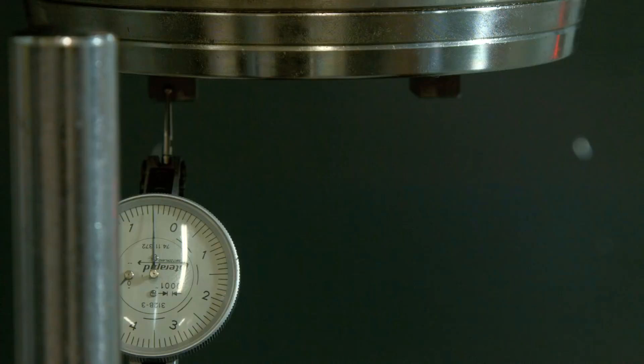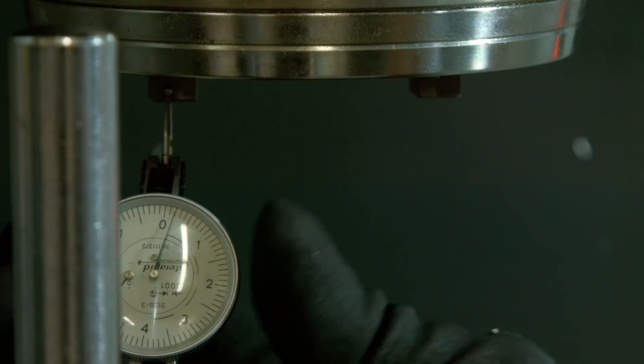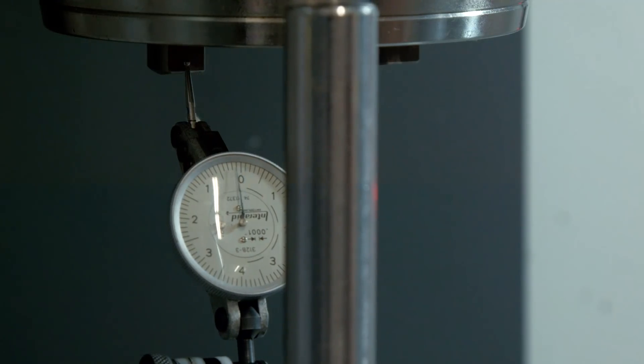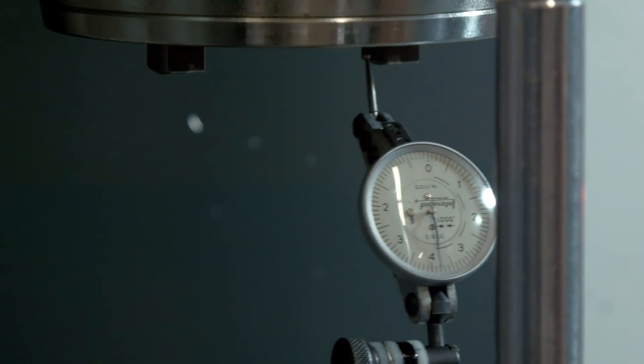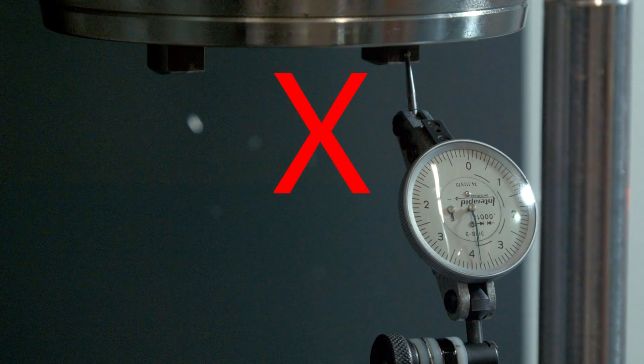Jog the indicator tip to one of the drive dogs and set it up to zero. Then jog in the X direction to the second drive dog. It's not yet aligned. So we need to make another change to parameter 257.